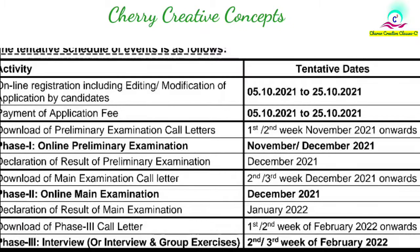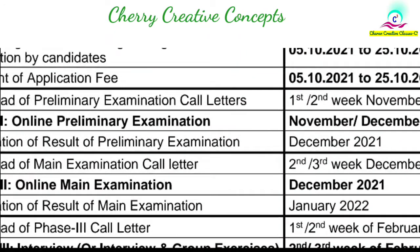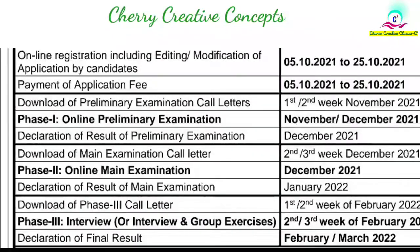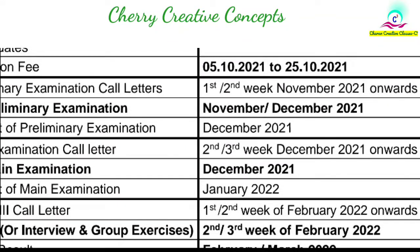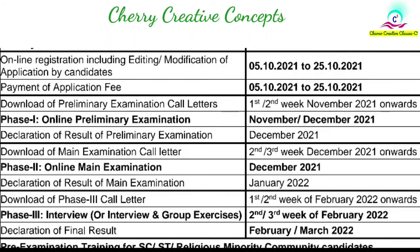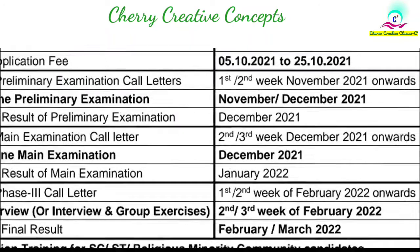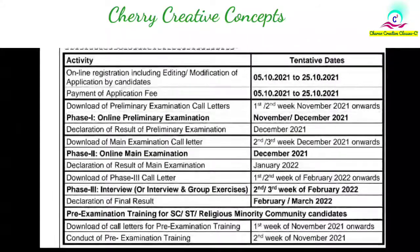This is a preliminary exam, with the call letter in December. The result is going to be next month. The main exam is going to be in December. The declaration is in January, so the result is going to follow. The recruitment process will complete, and the third phase — a group discussion — will be in February 2nd or 3rd week. The final phase is going to be in March or April.